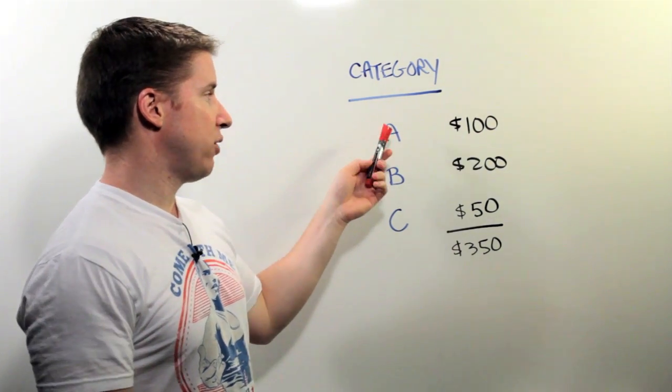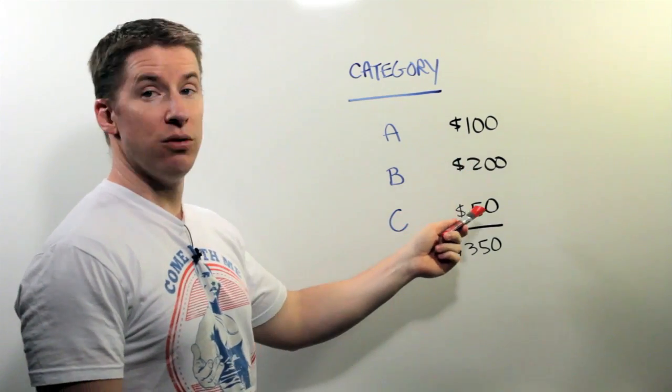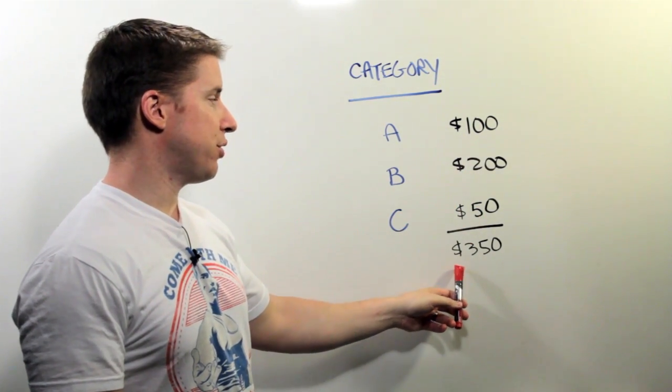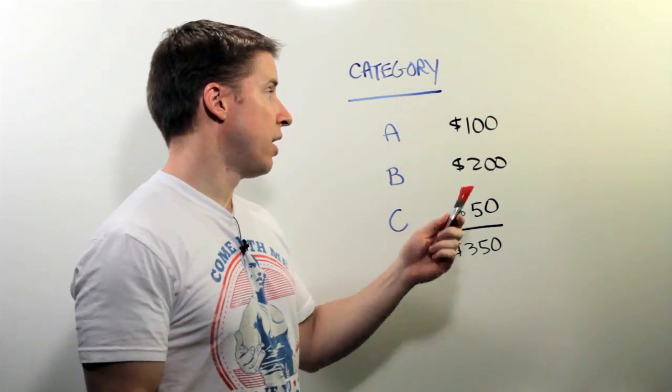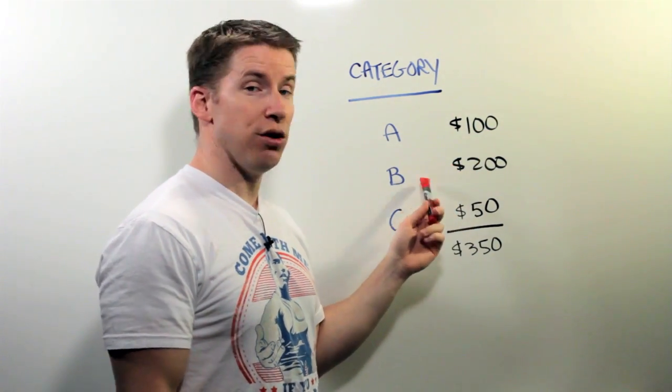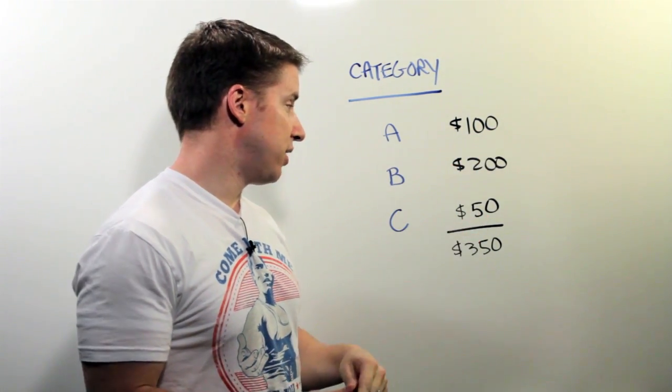I want to talk about a core principle of the software and just a little bit of math. So if you have category A with $100, B with $200, and C with $50, you have total cash on hand of $350. If you spend $100 in A, you're good. If you spend $200 in B, you're fine, and you can still spend $50 in C.